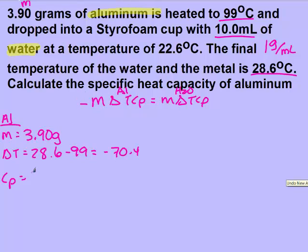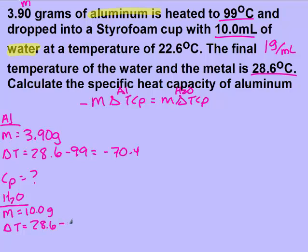Then I'm looking for the Cp of aluminum. For my water information: I have 10 milliliters, so that's the same as 10 grams. My change in temperature — the final temperature is always the same for both substances, regardless of if it tells you that. And it started at 22.6, giving me a change of 6. And my Cp — remember, is one that you should have memorized — 4.184 joules per gram degree Celsius.